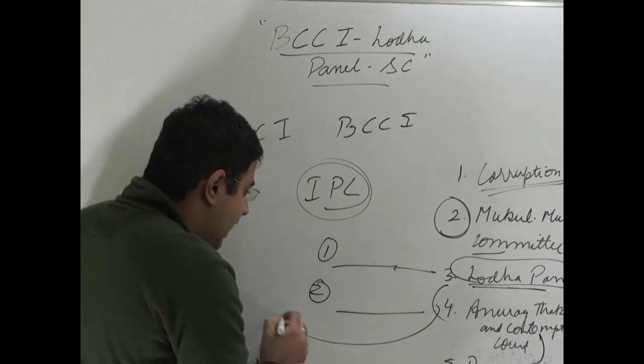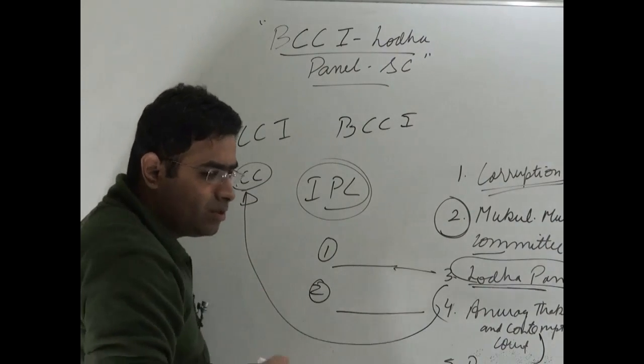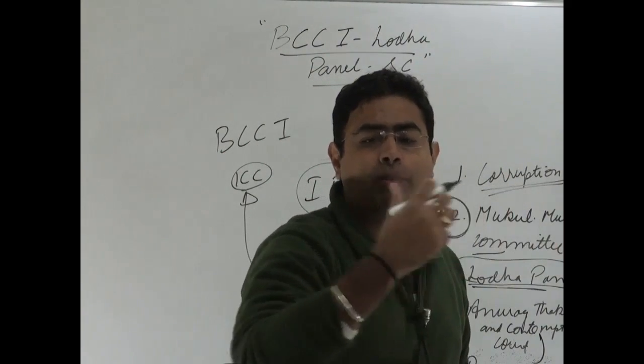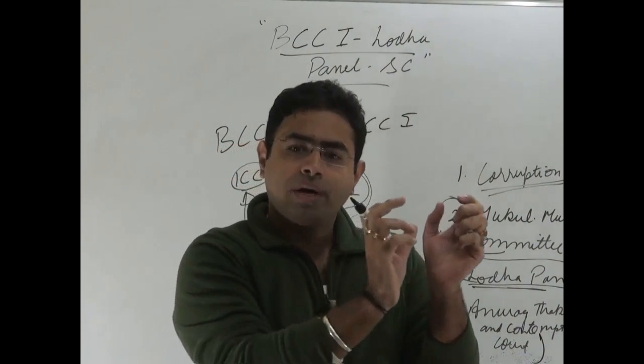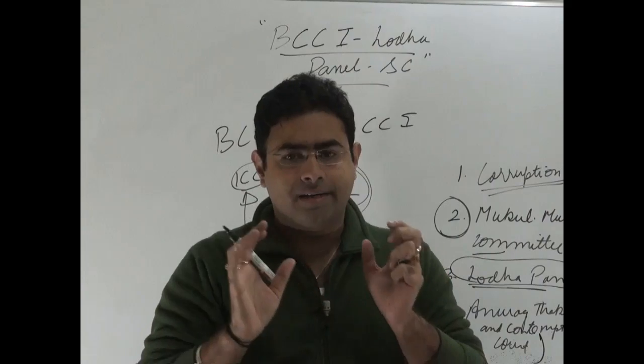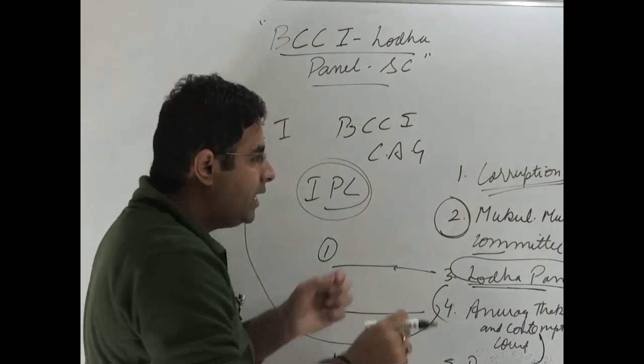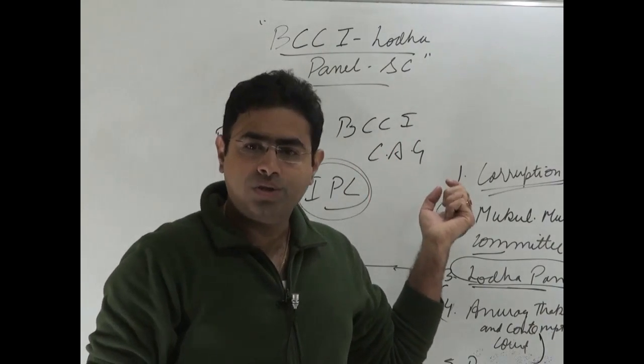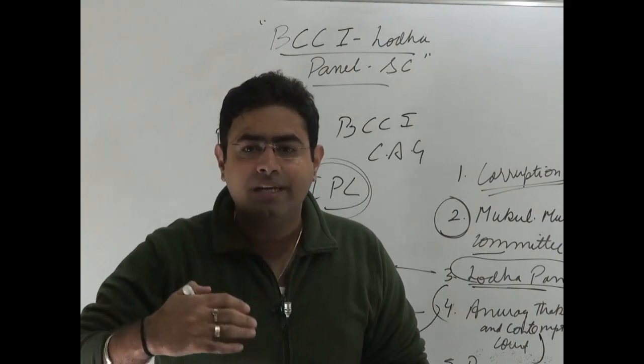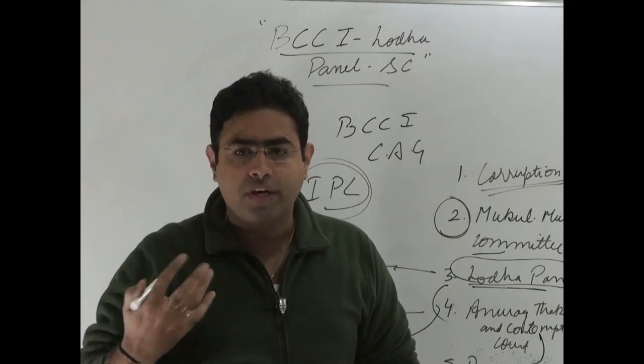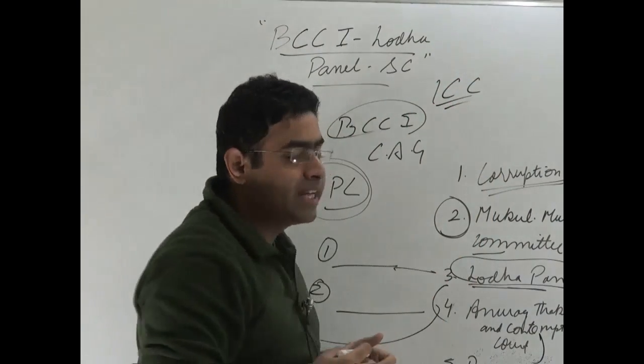But Anurag Thakur has written a letter to ICC. Now this was a kind of indirect lobbying that was done by him. Anurag Thakur told BCCI to write a letter saying that if CAG's employee, Comptroller and Auditor General's employee, is kept in BCCI, then government's direct involvement will happen in BCCI.